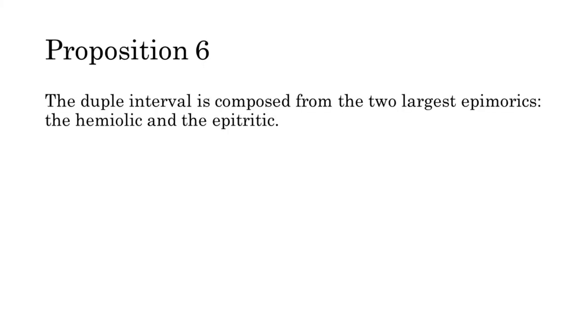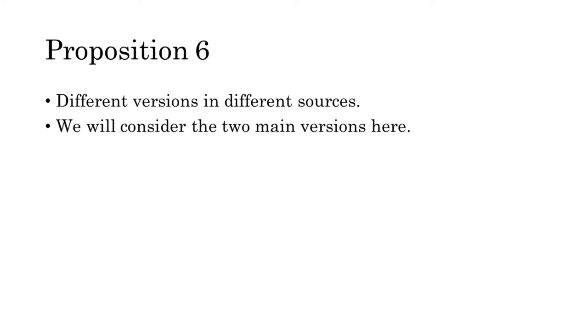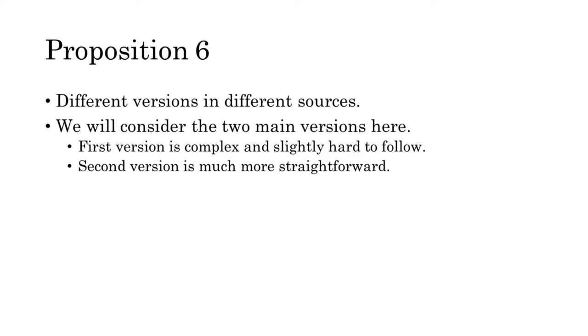The duple interval is composed from the two largest epimorics, the hemiolic and the epitritic. This proposition appears in a few different versions in different sources. I'm going to go through two different versions of it here. The first one is a little more complex and hard to follow, but the second version is quite a bit more straightforward. Here's the first, more complex version of the proof.